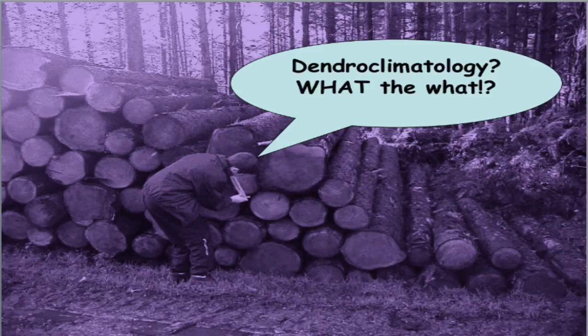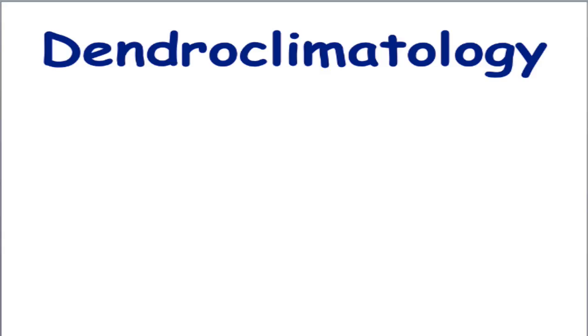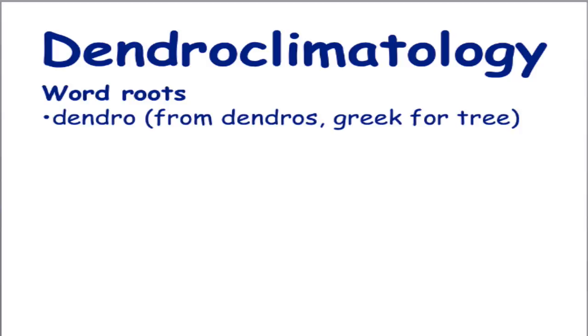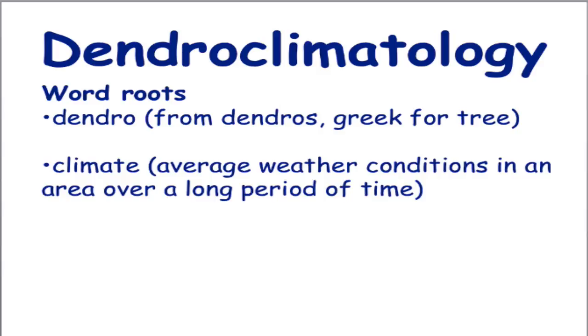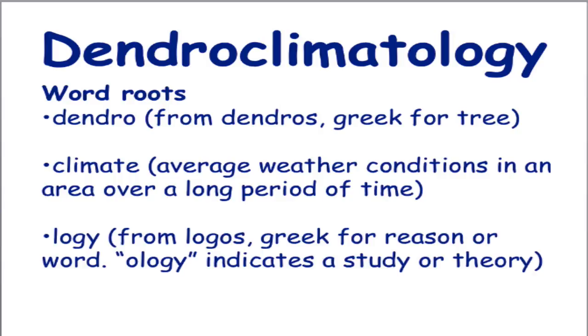Climate — you know what climate is. This is just a description of the average weather conditions in an area over an extended period of time. The tricky part is 'dendro.' What do you suppose that means? Well, 'dendro' comes from the Greek root 'dendros,' which just means tree. So if you put it all together, dendroclimatology is just the study of the average weather conditions in an area using trees. You already knew most of it.